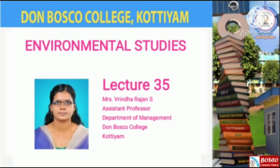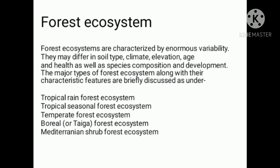Hi viewers. This is a continuation of the previous class on Types of Forest Ecosystems. These are the different types: Tropical Rainforest Ecosystem, Tropical Seasonal Forest Ecosystem, Temperate Forest Ecosystem, Boreal or Taiga Forest Ecosystem, and Mediterranean Shrub Forest Ecosystem. Let us discuss these in detail.